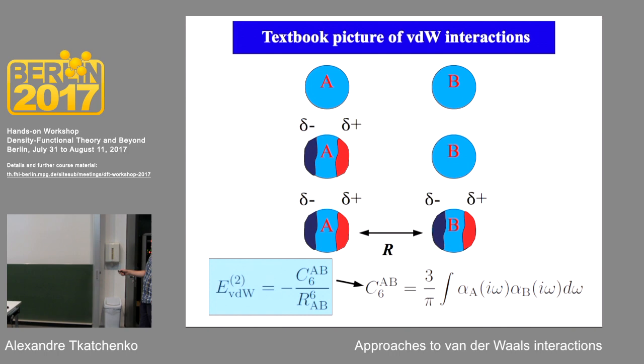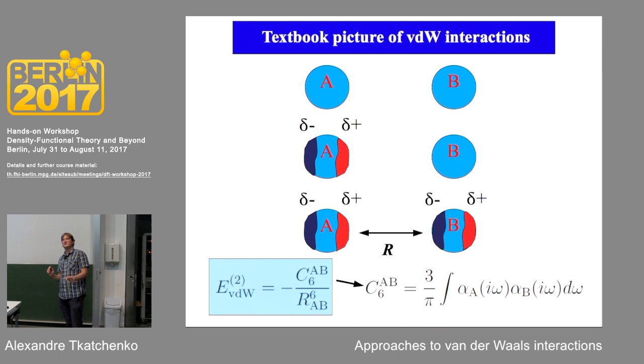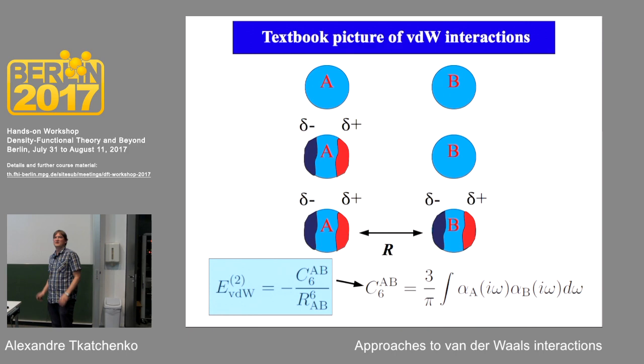The frequency-dependent polarizability describes time-dependent fluctuations on atoms A and B induced by the zero-point energy of the quantum vacuum. This function is written as a function of imaginary frequency — making a Fourier transform from time to imaginary frequency — which yields a smooth function over which you can integrate. If you can calculate this accurately, you can compute van der Waals interactions for two atoms.